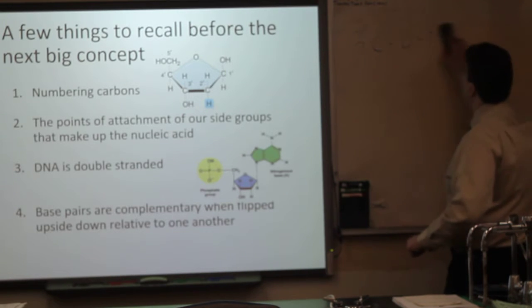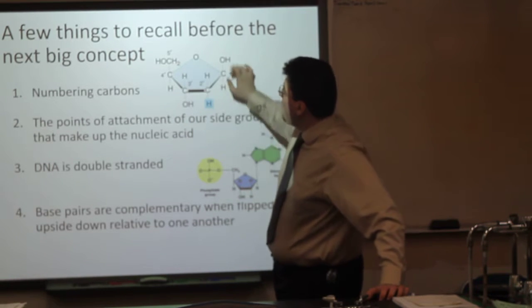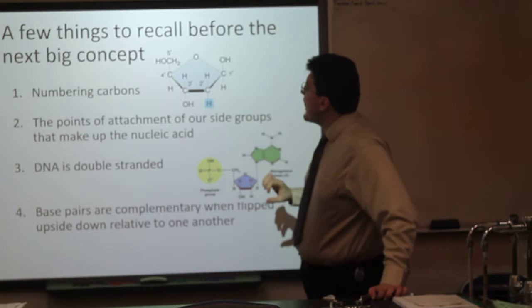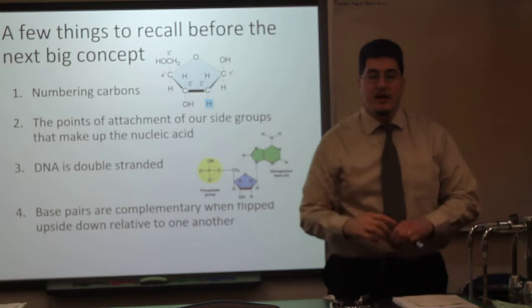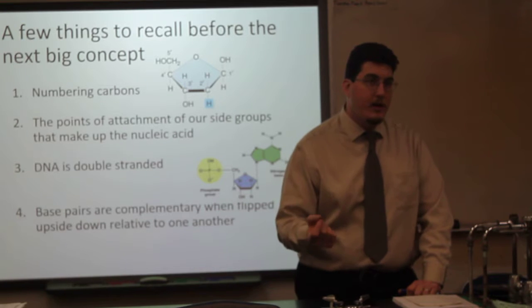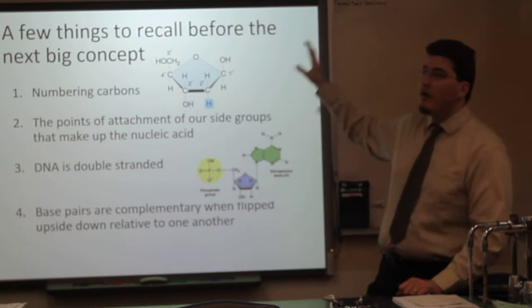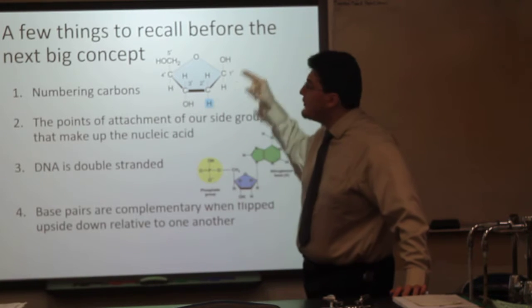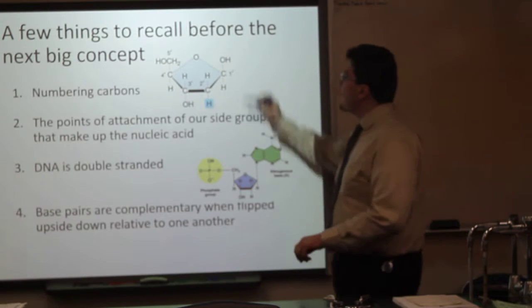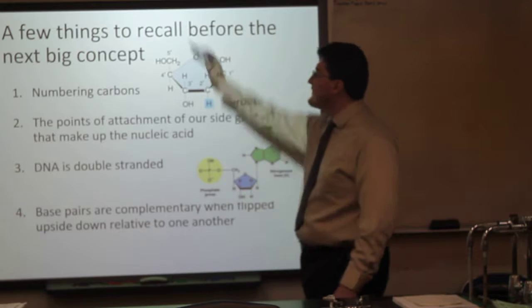Now let's recall a few things. Numbering carbons: the most interesting group is our ether group — our 1,4 ether linkage in our deoxyribose sugar. This is our 1' carbon. It's prime because there are other carbon-containing compounds; the nitrogenous base also contains carbon. So we label the carbons in the ribose sugar as prime carbons — they are our primary carbons. We label them with a prime, that little apostrophe. Our 1' carbon is here, 2' carbon here, 3' prime, 4' prime, and our 5' prime is a peg sticking off.